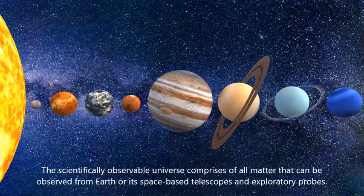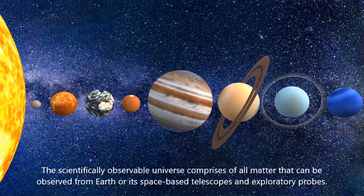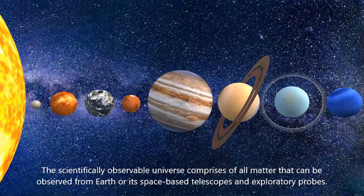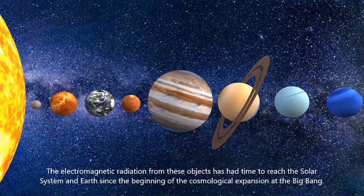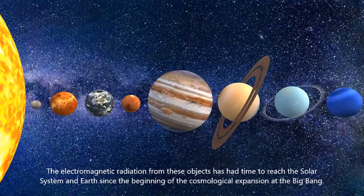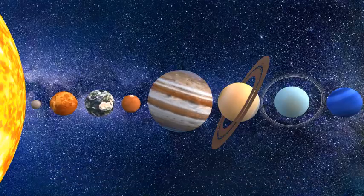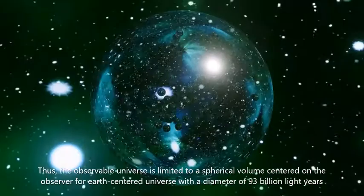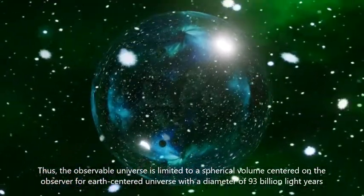The scientifically observable universe comprises of all matter that can be observed from Earth or its space-based telescopes and exploratory probes. The electromagnetic radiation from these objects has had time to reach the solar system and Earth since the beginning of the cosmological expansion at the Big Bang. Thus, the observable universe is limited to a spherical volume centered on the observer for Earth-centered universe with a diameter of 93 billion light-years.